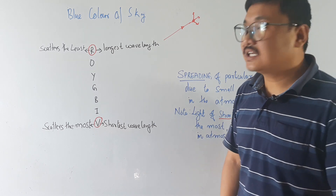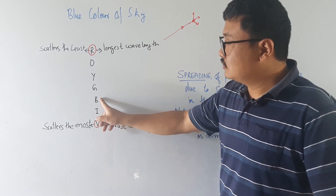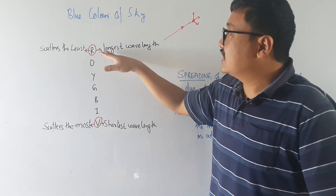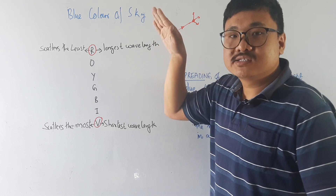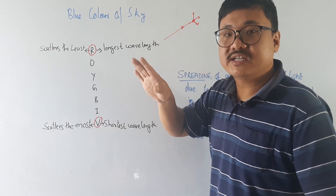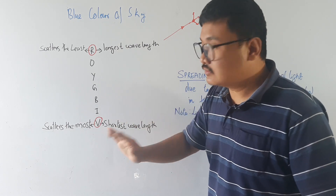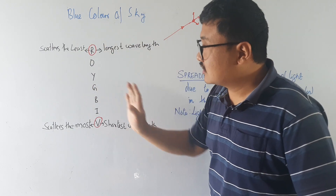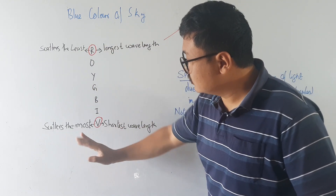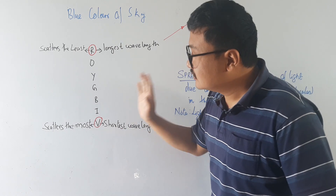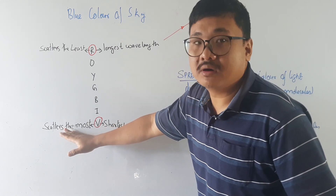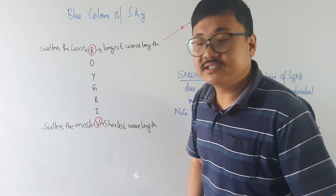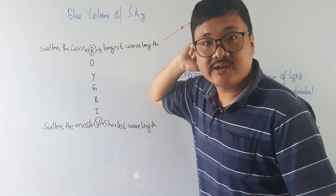We know there are seven colors in the light spectrum: violet, indigo, blue, green, yellow, orange, and red. We have also studied that red has the longest wavelength — it was bending the least in dispersion — and violet was bending the most because it has the shortest wavelength. So violet should scatter the most. Then why does the atmosphere appear blue to us instead of violet?